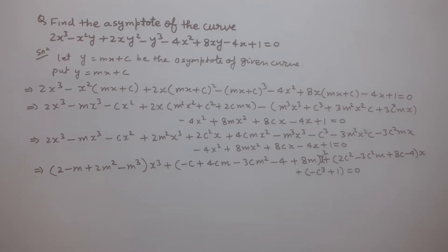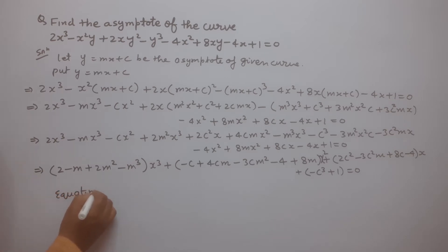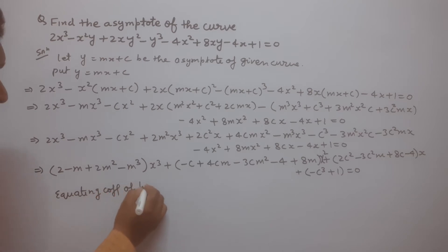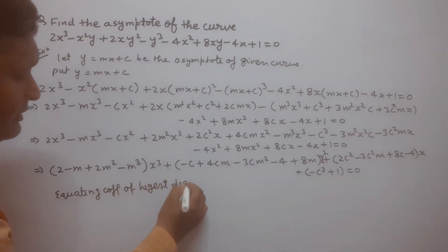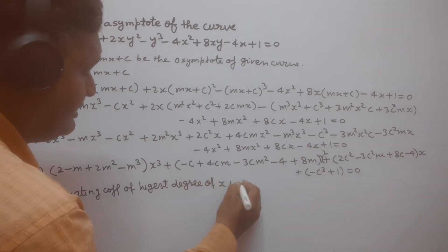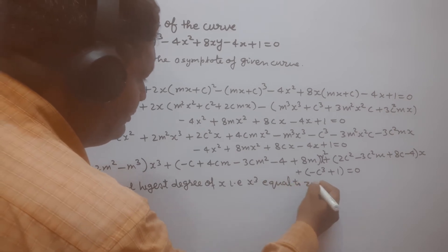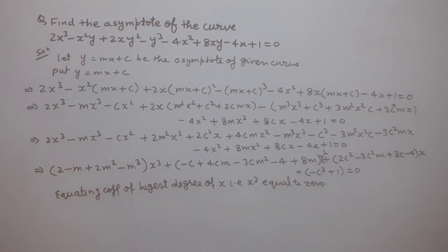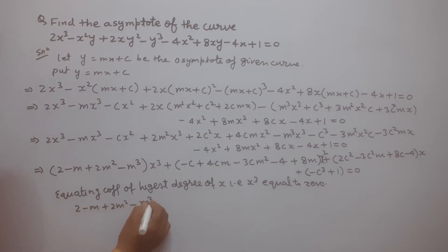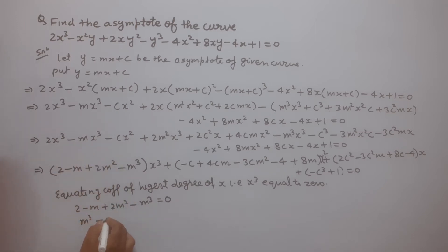Now we equate the coefficient of the highest degree term of x to zero and get an equation in m. That is: 2 - m + 2m² - m³ = 0. Multiplying both sides by minus one, this can be written as m³ - 2m² + m - 2 = 0.